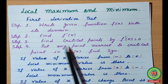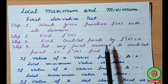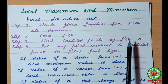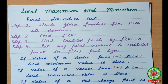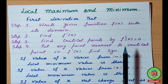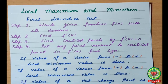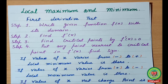Then we will find out the critical point. Critical point means the value of x obtained by putting f'(x) equal to 0. Now put any point nearest to the critical point. For example, if we have a critical point at x = 3, in local maxima and minima we will not put the exact value 3. We will put a value near to 3 — it may be 2 or it may be 4.